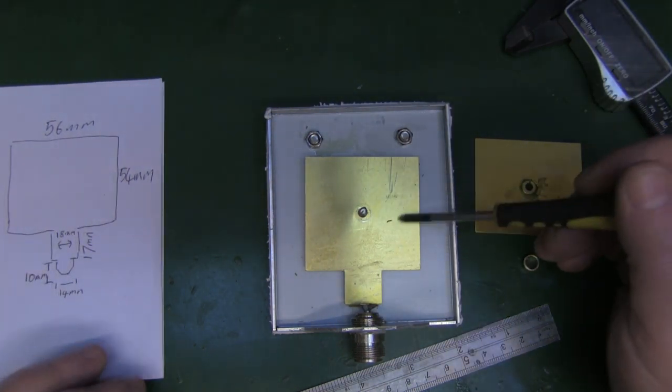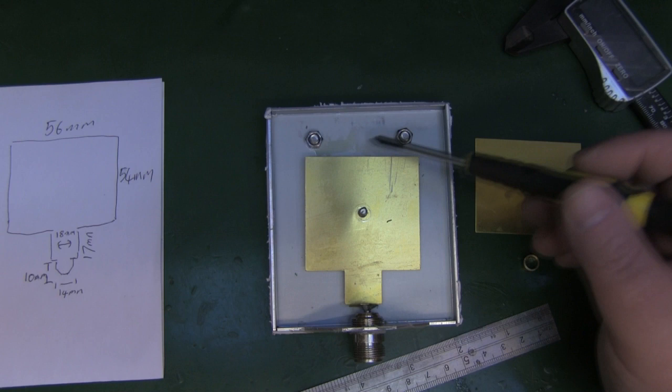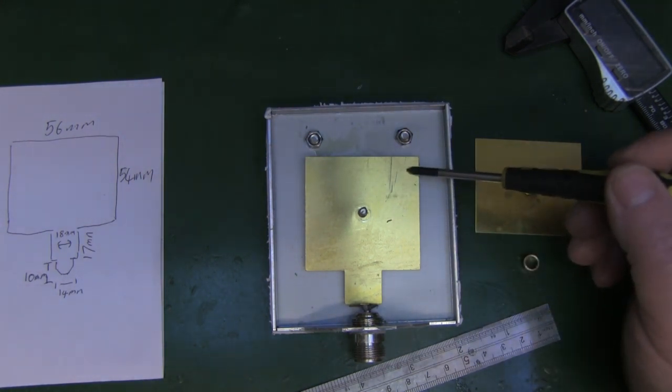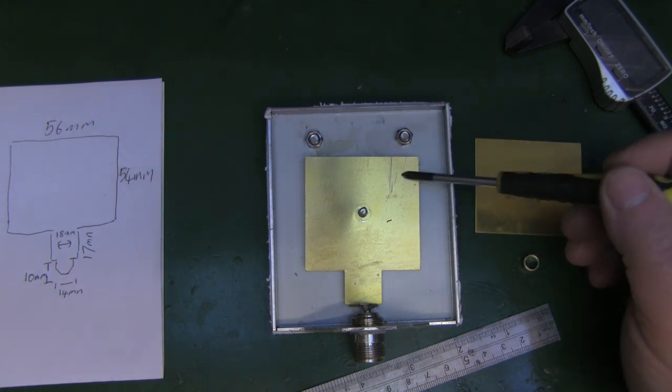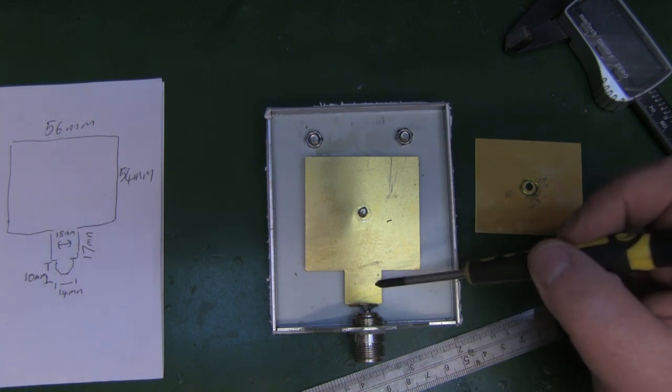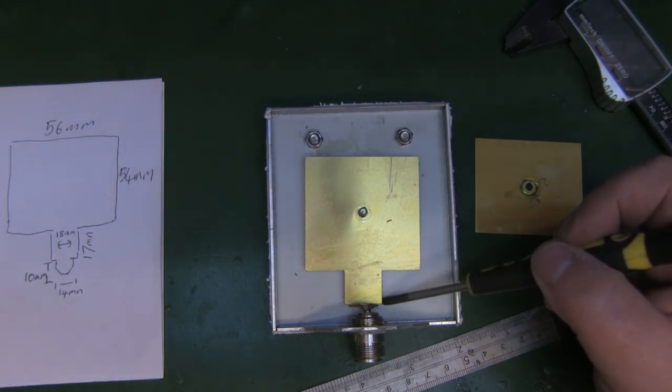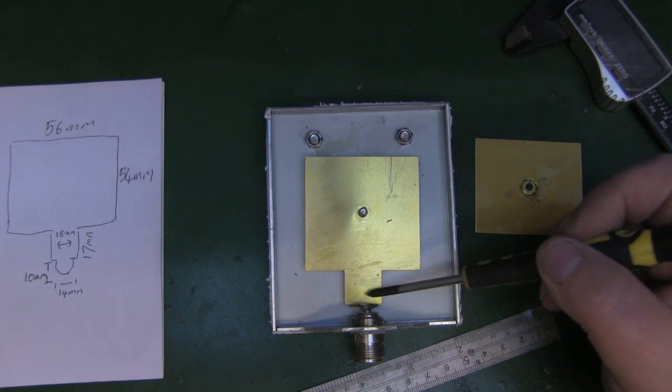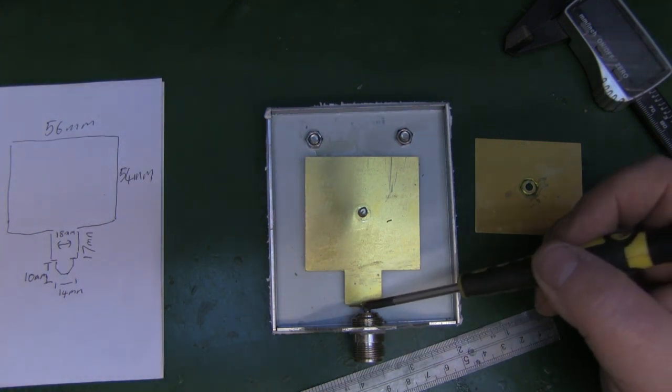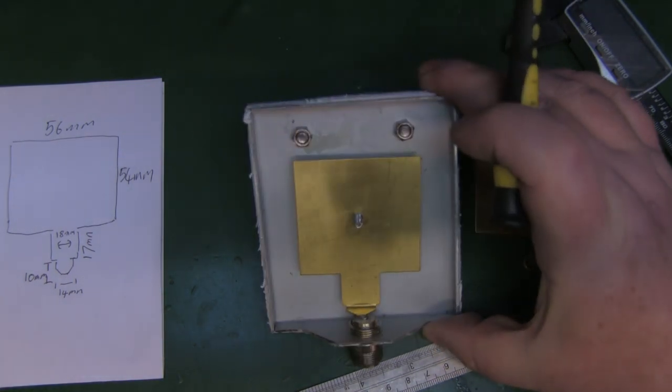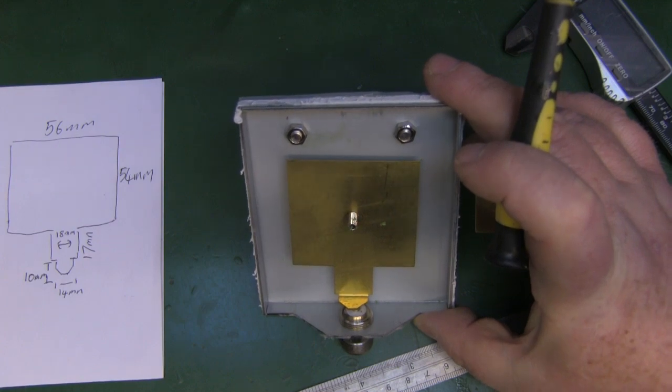As for the numbers, this is the main element here. This is 56mm in that direction, and 54mm in this direction. The feed point here is 18mm wide, and it's 17mm down to the second taper here. And this taper is 10mm long, 14mm wide. And this little piece here is just under 10mm wide. So you can see how it tapers down like that.